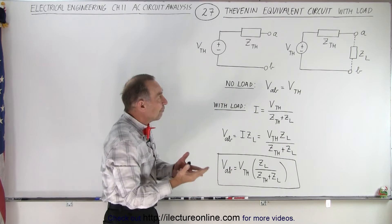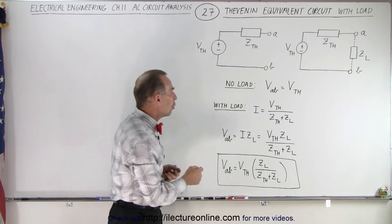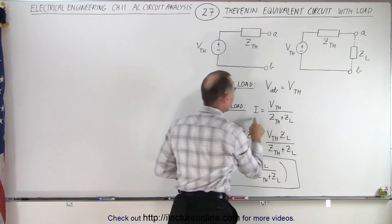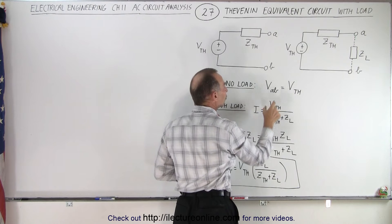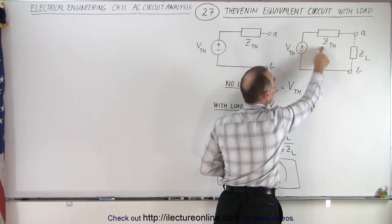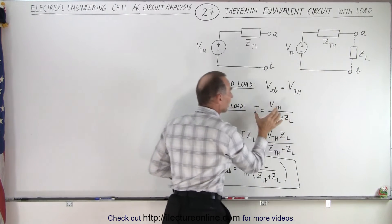Well, the load is going to affect the rest of the circuit. Notice when you add the load, you now calculate the current through the circuit, and the current will be the Thevenin voltage divided by the total impedance - the Thevenin impedance plus the load impedance combined.